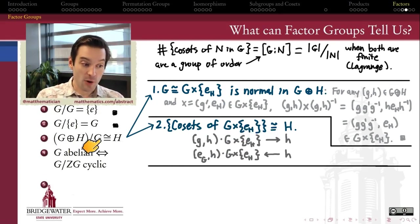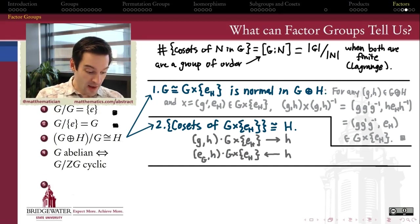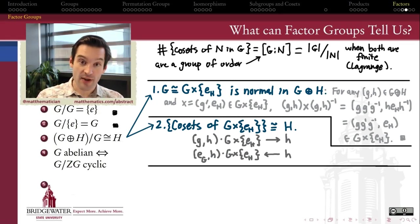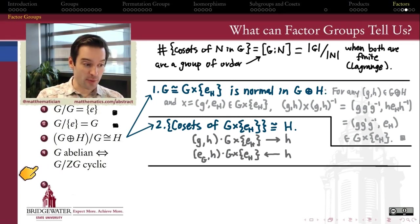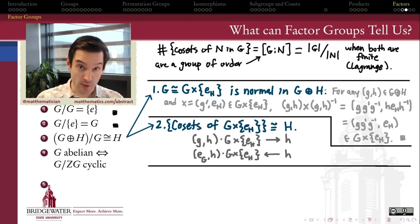So products and quotients have this cancellation property up to isomorphism. The next interesting fact about factor groups is that factor groups are fairly constrained in the kind of structure that they can have. If I take the factor group of G by the center of G, the first thing to ask is: how do we know the center of G is going to be a normal subgroup of G?